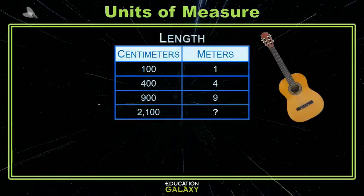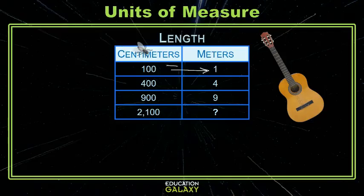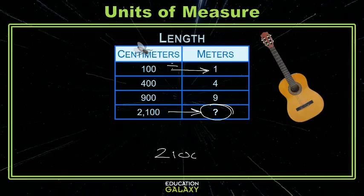One last one here with length in the metric system. A meter is about the length of a guitar. A centimeter is very small, about the length of a fly. So we're going from this small unit to this bigger unit — that means we divide. To get from 2,100 to our answer, we divide by 100. We learn that 21 meters is equal to 2,100 centimeters.